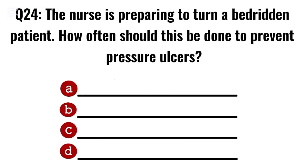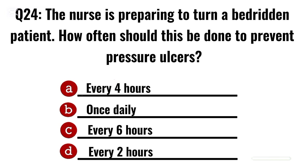Question 24. The nurse is preparing to turn a bedridden patient. How often should this be done to prevent pressure ulcers? Correct option D: Every two hours.